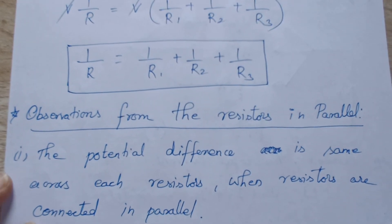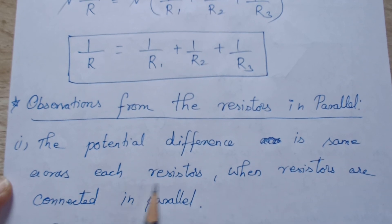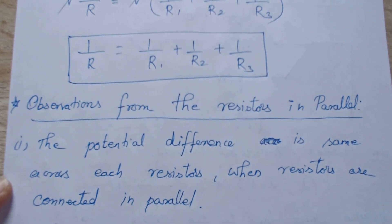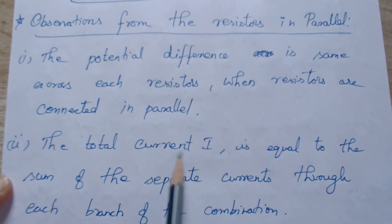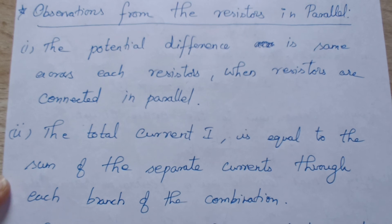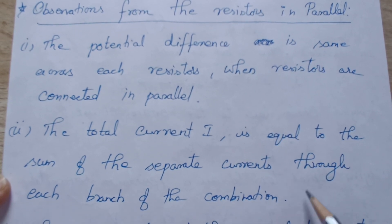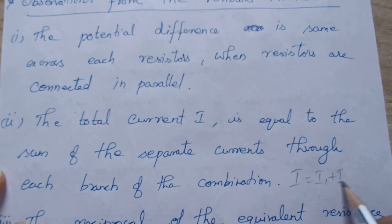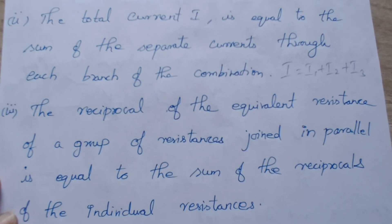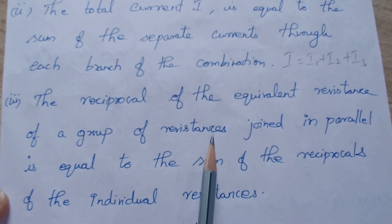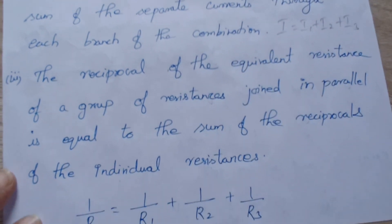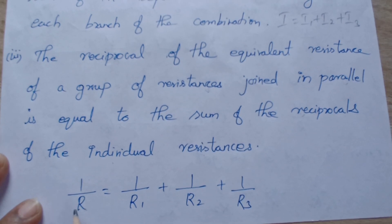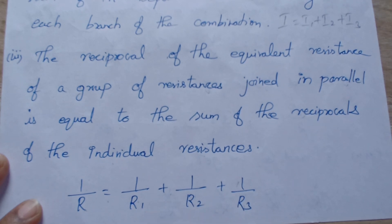The observations from resistors connected in parallel: First, the potential difference is the same across each resistor — it is V for all three resistors, not V1, V2, V3 separately. Second, the total current I equals the sum of separate currents through each branch: I equals I1 plus I2 plus I3. Third, the reciprocal of the equivalent resistance of resistors joined in parallel equals the sum of the reciprocals of individual resistances: 1 by R equals 1 by R1 plus 1 by R2 plus 1 by R3.